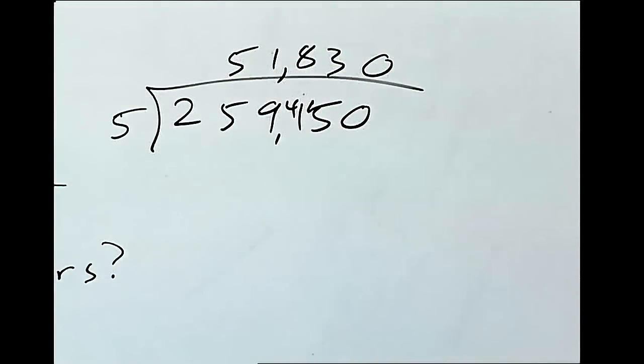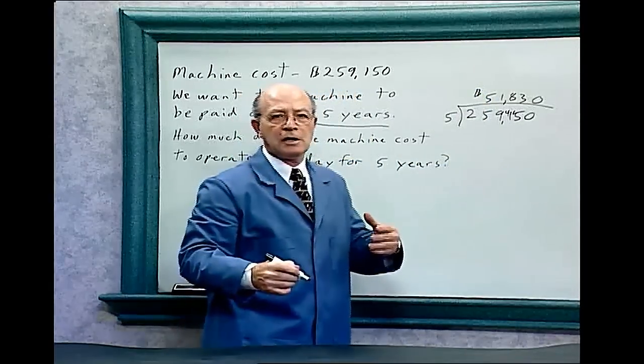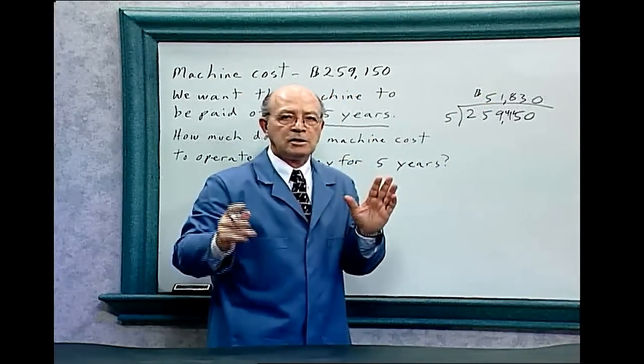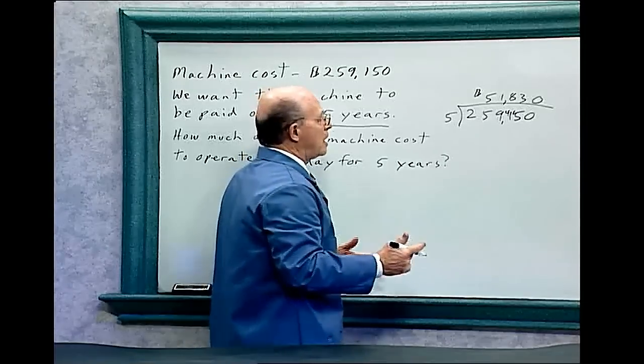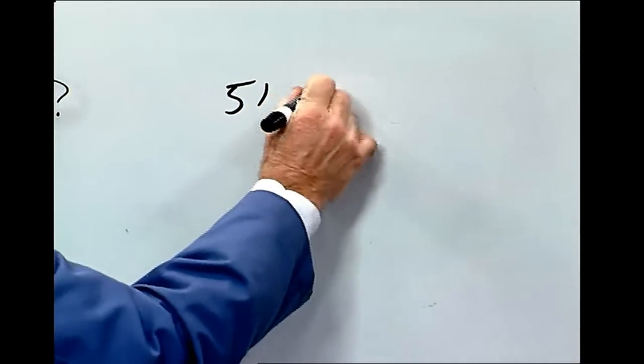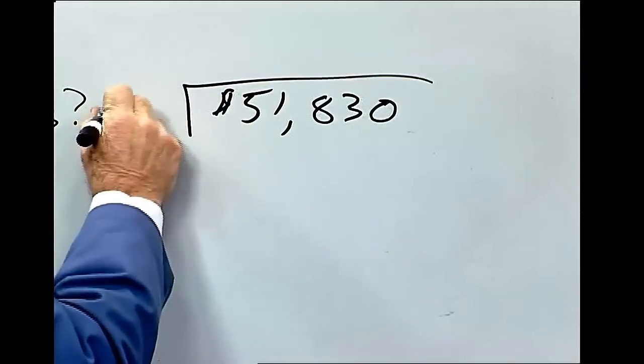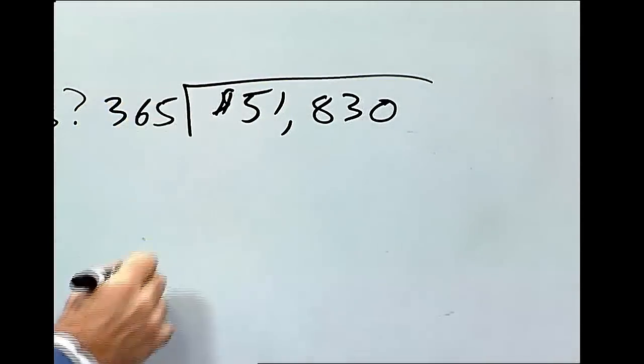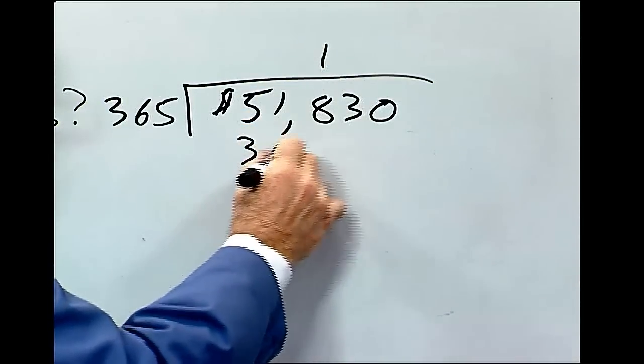So it's $51,830 for one year profit that we want to make on that machine. Now divide $51,830 by 365, which is days per year.